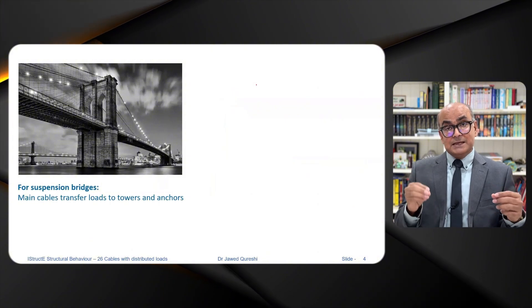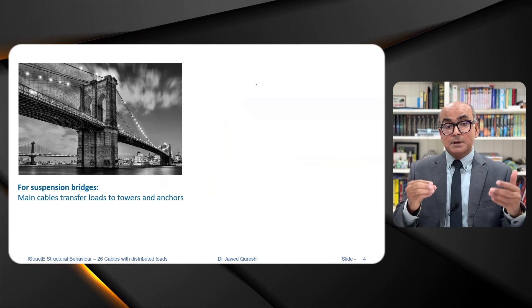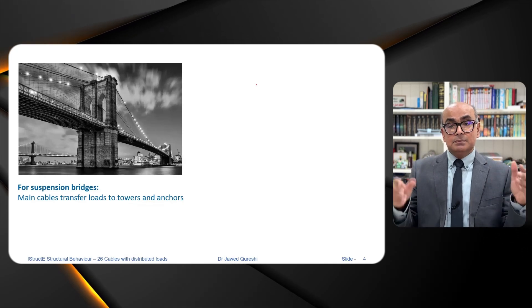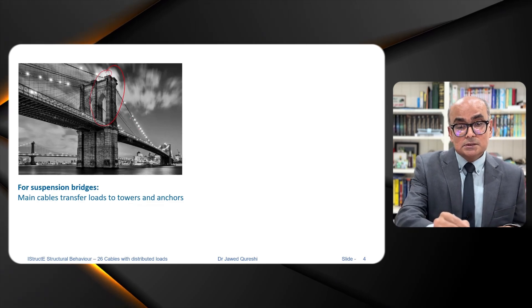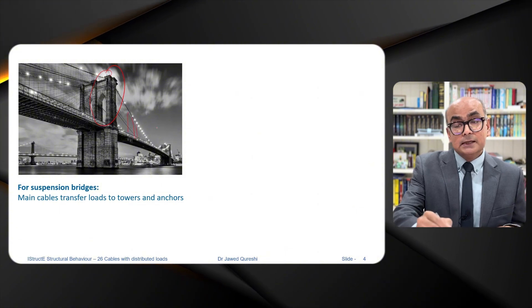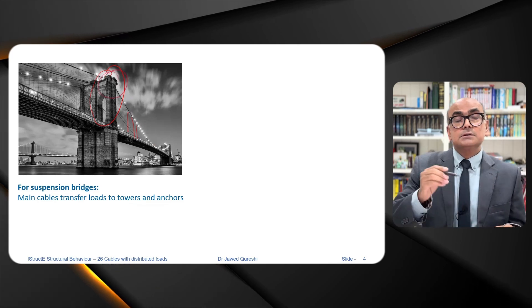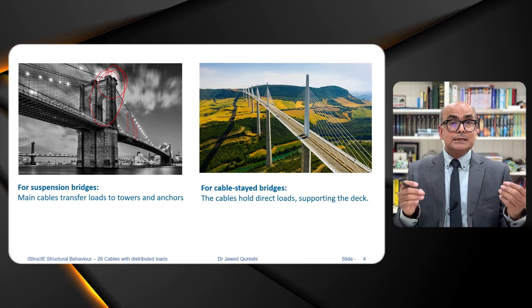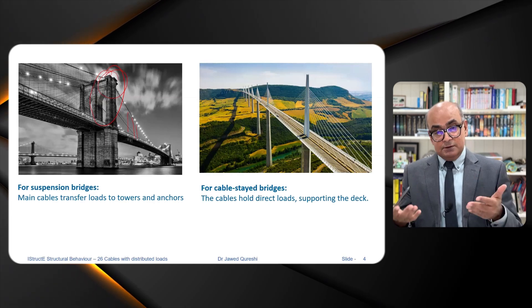Now, there is a difference between suspension bridges and cable state bridges. In suspension bridges, the load is transferred from main cables to towers and bridge deck is supported by vertical hangers and vertical hangers are again supported by main cable and main cable transfers the load to the towers. And we have cable state bridges as well. In cable state bridges, load path or load distribution is different.